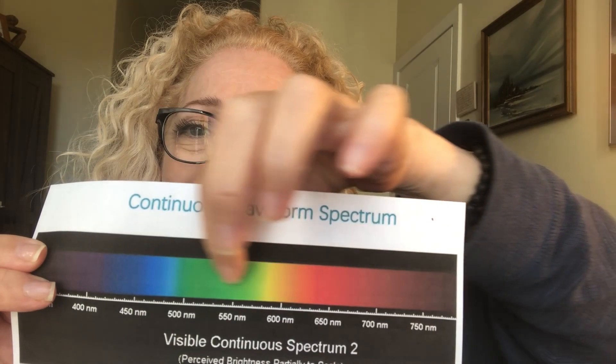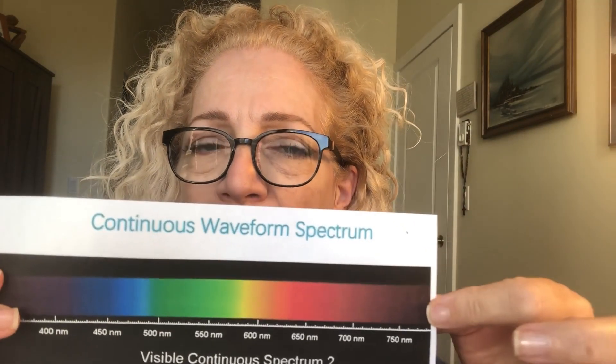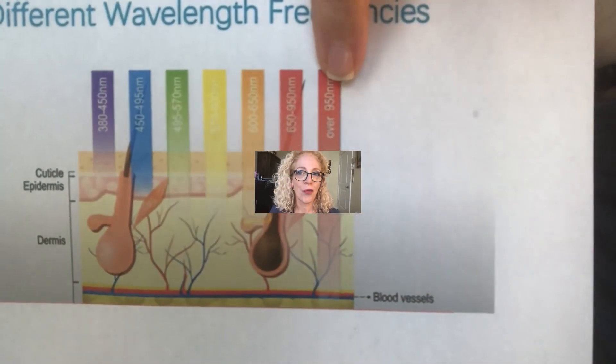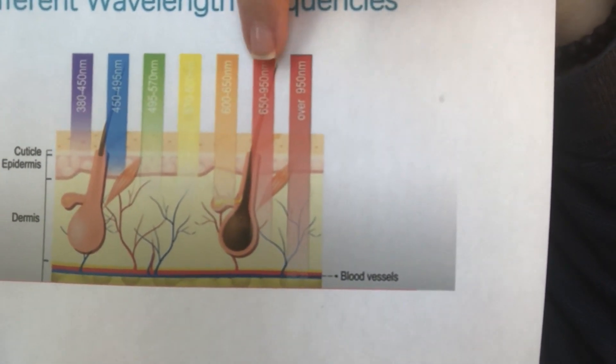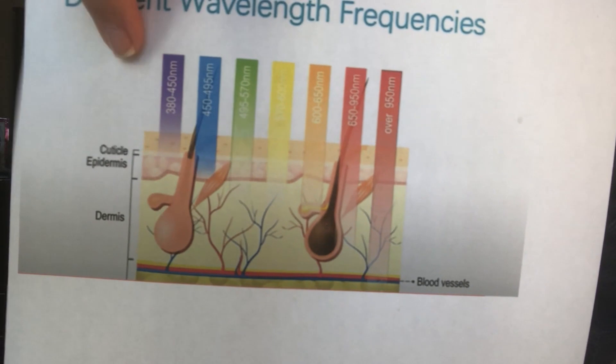Today we're going to talk about this part of the spectrum: blue, green, yellow, and red. The infrared, which is the heat and the longest wavelength, is also part of this. It is a therapy using the colors of the sun. Every light has different biological effects on the skin and body — this is called photobiomodulation.